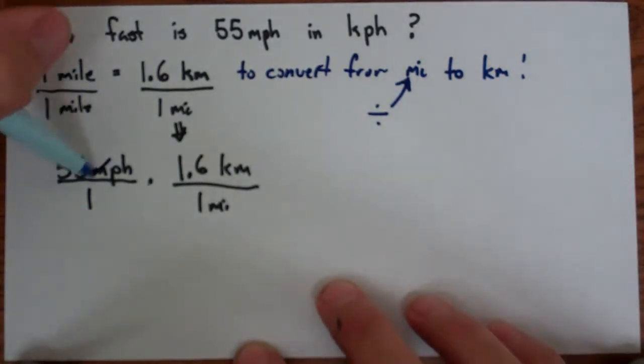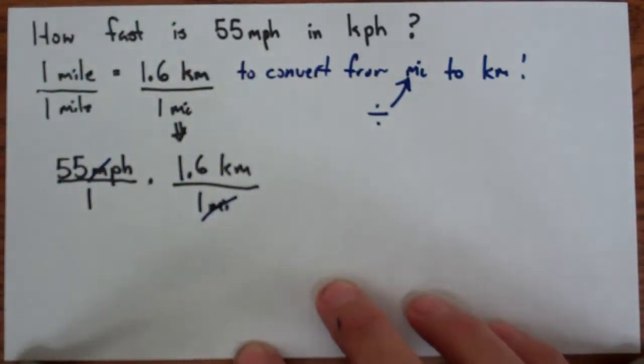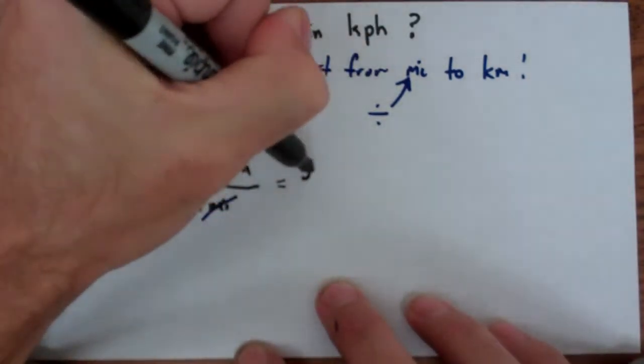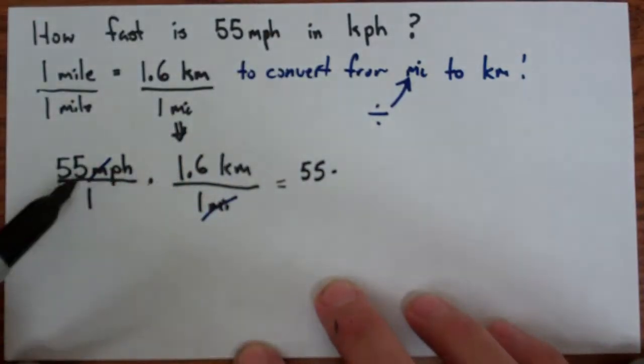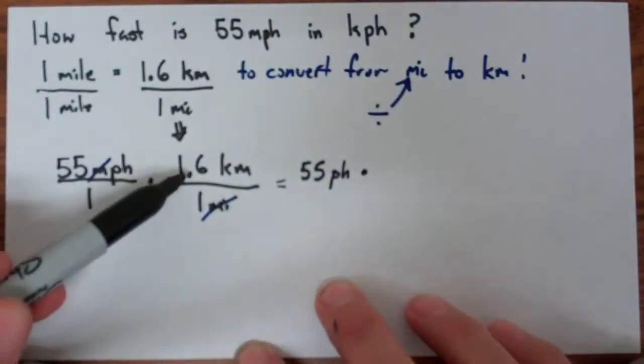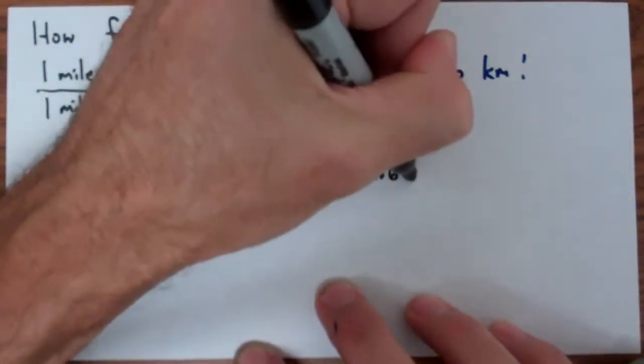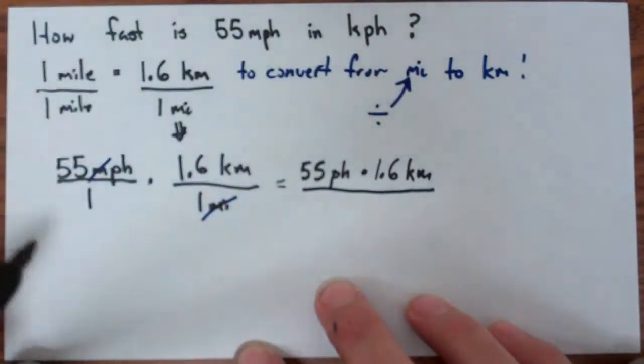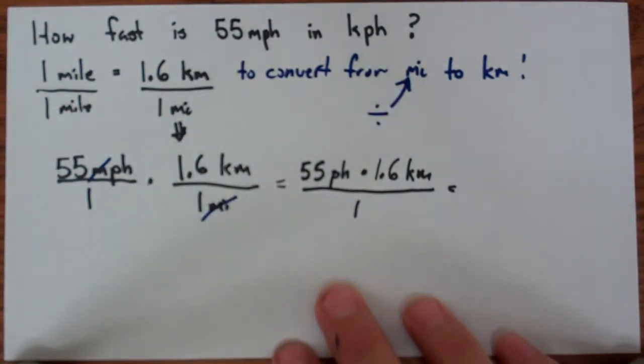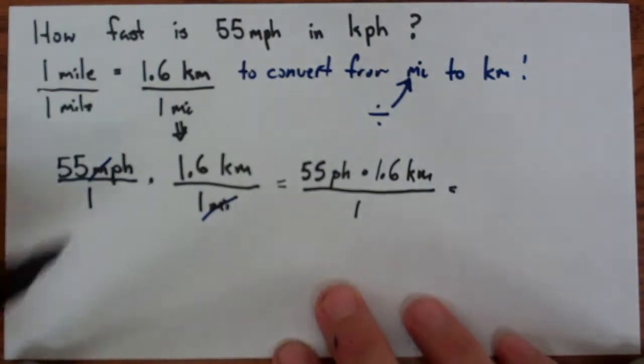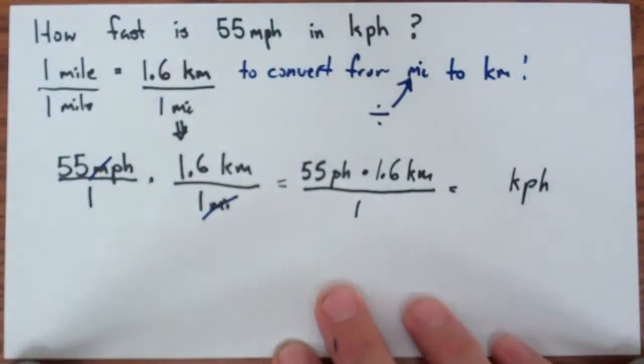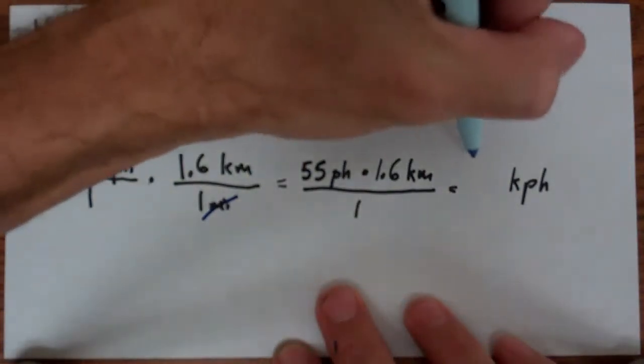The miles are here, it's miles per hour, so the miles will reduce out, and what will be left? Well, you're 55 per hour times the 1.6 kilometers, all over 1 times 1 is just 1. And so anything divided by 1 is going to go away. And then you have the kilometers times per hour is going to give you kilometers per hour. And so this is exactly where our answer is going to go.